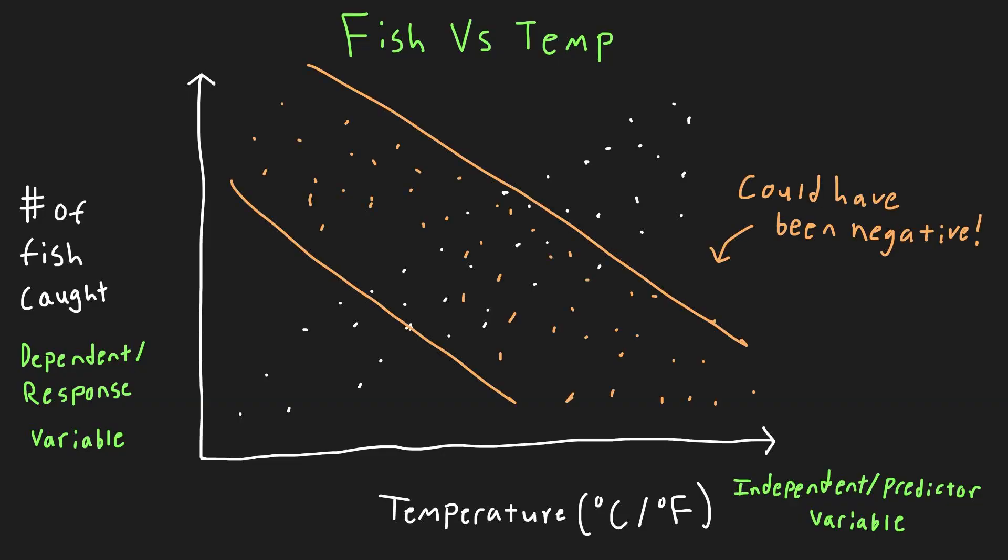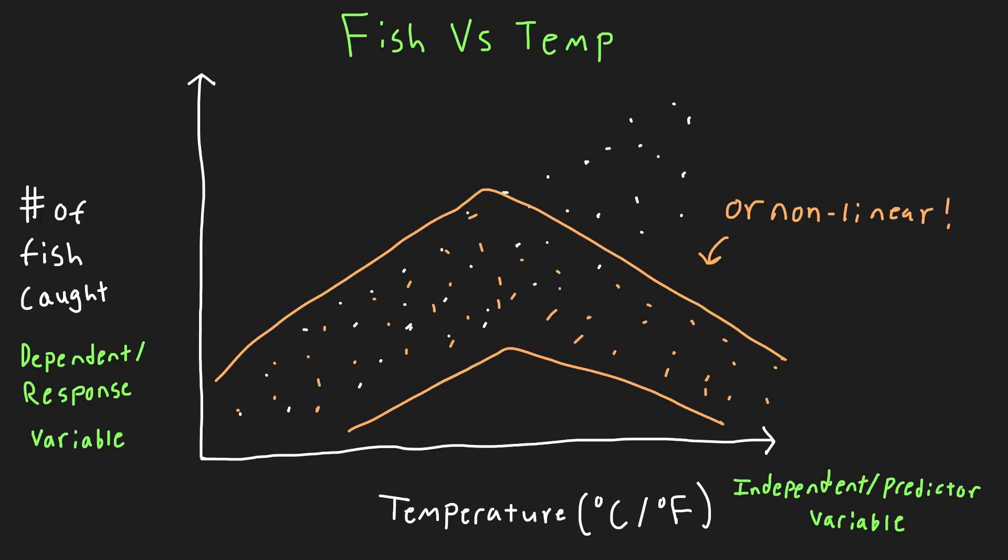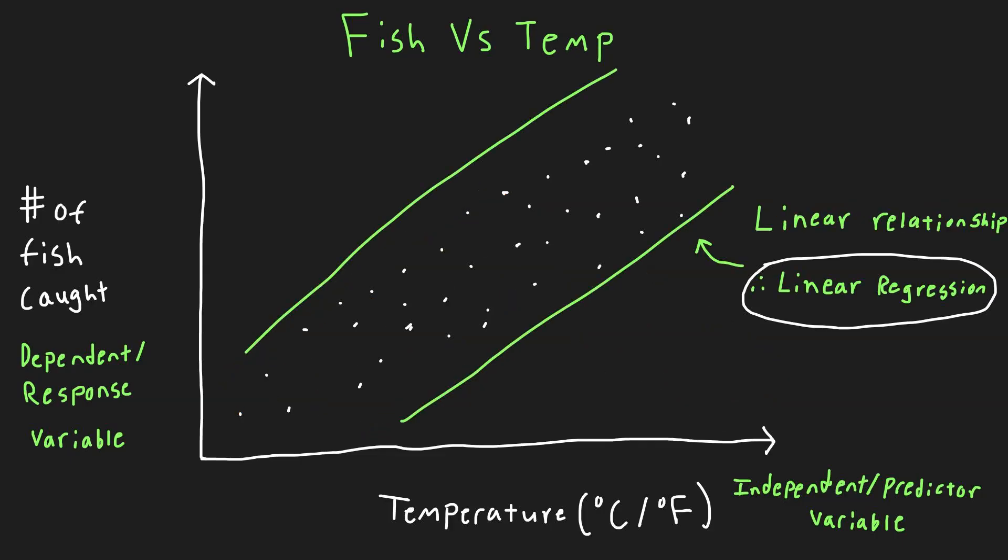Now even though we saw a positive linear relationship, we could have as easily seen a negative one or even a non-linear relationship as well. Identifying the trend of the data helps us determine what sort of action we should take. In this case, we will need to use linear regression for a linear relationship.